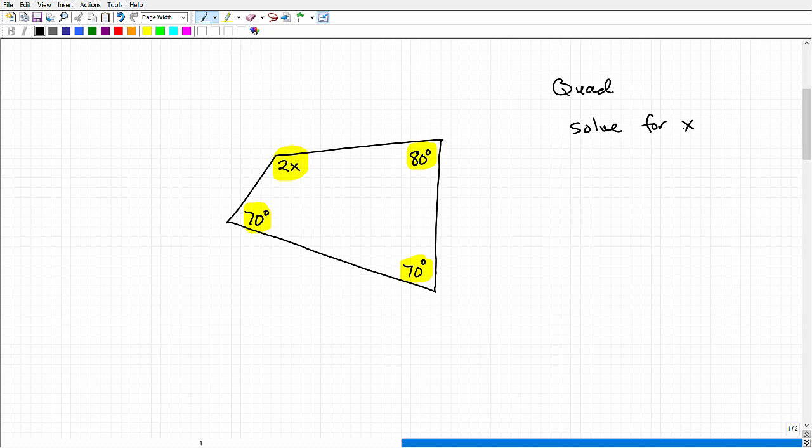But the first thing is, we can't solve this problem unless we know something about quadrilaterals. The main thing we need to know is that the sum of the angles of any quadrilateral is 360 degrees. Just like any triangle, the sum of the angles of a triangle are 180 degrees. For a quadrilateral, it's 360 degrees.